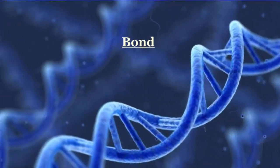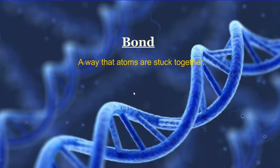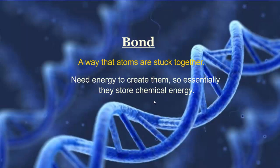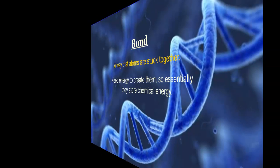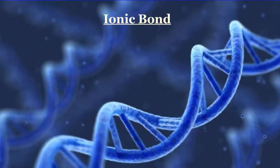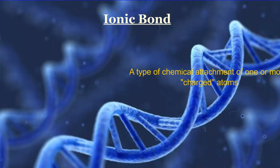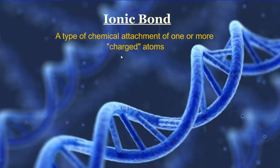Along with atom and element, we have the term bond. A bond is simply a way atoms are stuck together. We'll talk about a few different ways atoms bond, and you'll hear that energy is needed to create these bonds — so essentially bonds store chemical energy. One type is an ionic bond, a type of chemical attachment of one or more charged atoms.